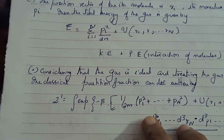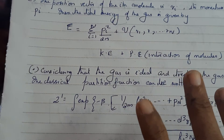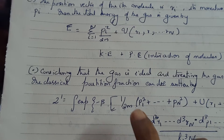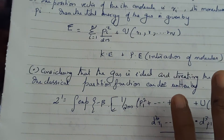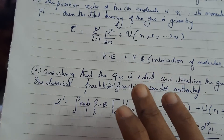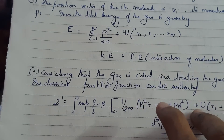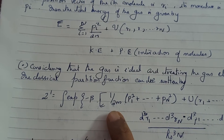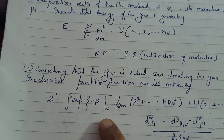The next step is that we are treating the gas as an ideal gas. The ideal gas means the molecules do not interact much with each other. Now, from the last lecture you know how to write the classical partition function. The classical partition function considers energy as a function of position and momenta, and from the last lecture you know the formula for writing the partition function for an ideal gas treated classically.